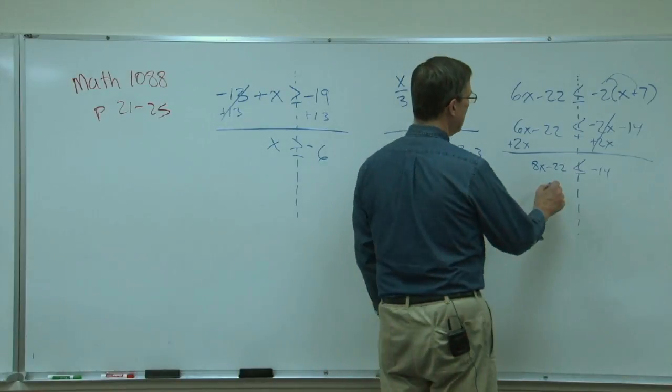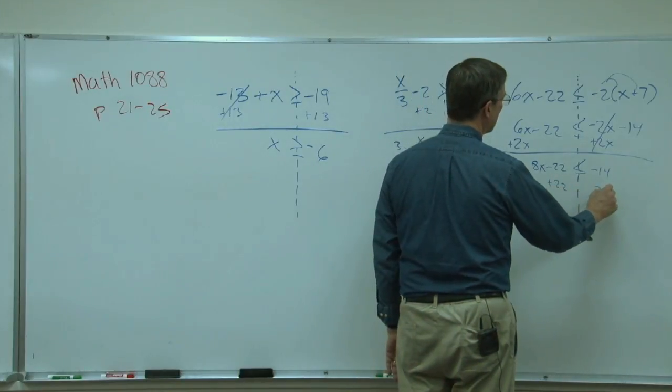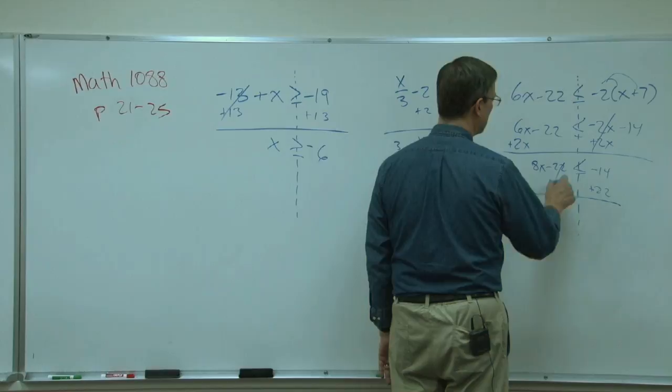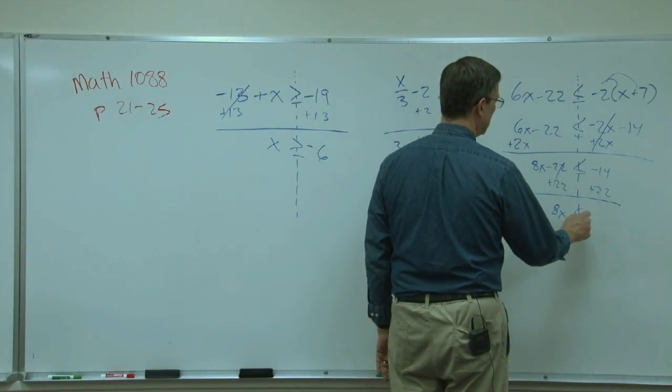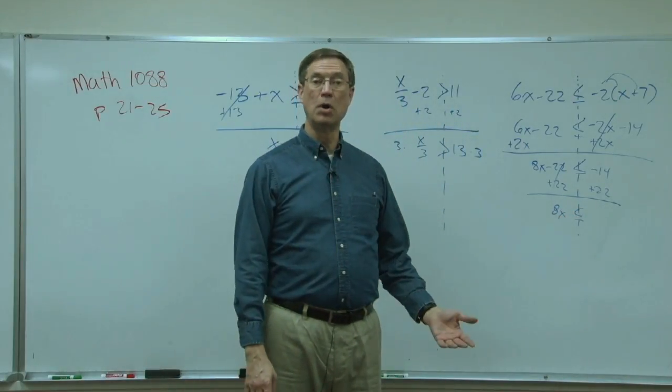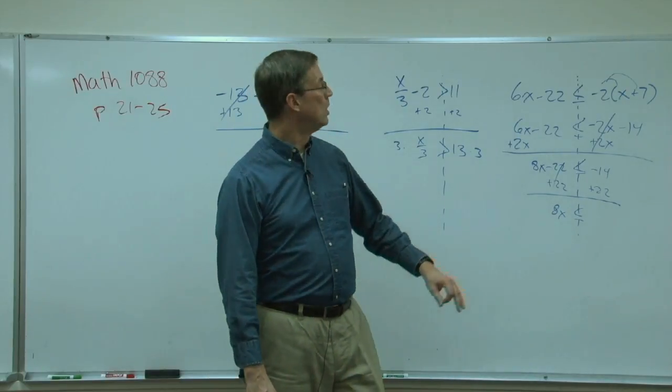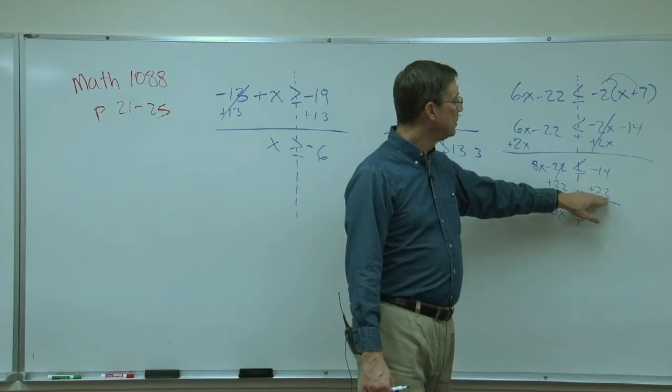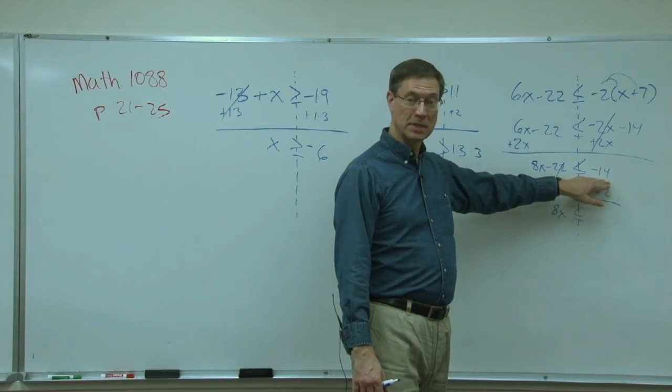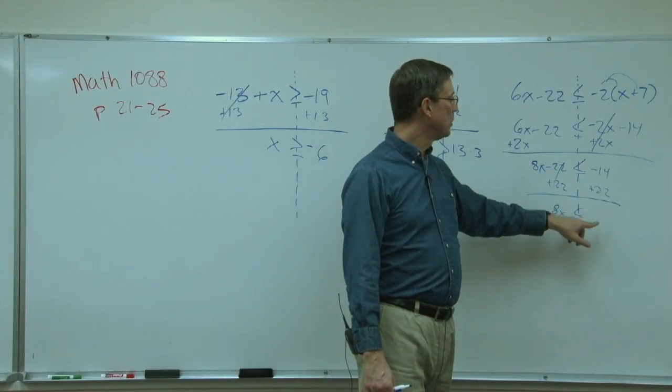Alright, last step is we're going to add the 22, and then we're going to have to think about subtracting the smaller from the larger, keep the sign of the larger. So we're actually going to do 22 subtract 14, and then the 22 is larger, so our answer will be positive.